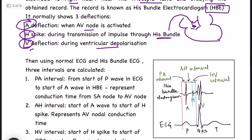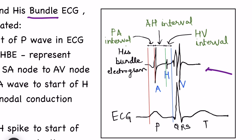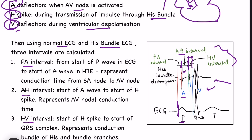We study these deflections in combination with ECG. Using normal ECG and His bundle ECG together, three intervals are calculated: PA interval, AH interval, and HV interval. The PA interval is from the start of the P wave to the start of the A deflection. The AH interval is from the start of the A wave to the start of the H wave. The HV interval is from the start of the H wave to the start of the V wave.